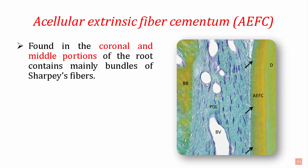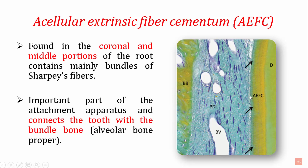The second type is acellular extrinsic fiber cementum, found mainly in the coronal and middle portions of the tooth root — apical to the acellular afibrillar cementum. As the name suggests, it has no cells but does contain fibers — specifically Sharpey's fibers from the periodontal ligament. It has the most important function of providing attachment to those fibers and is a key part of the attachment apparatus connecting the tooth with the alveolar bone.